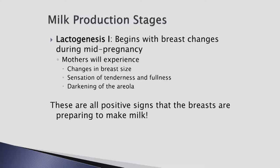Lactogenesis 1 begins around mid-pregnancy, 16 to 18 weeks gestation. Ductal and lobular development accelerates with the influences from hormones excreted during pregnancy. The glandular structure is able to begin secretion of colostrum by the last trimester. Some women may experience leaking; others will not. Both situations are normal. Let expectant moms know there is no need to express this milk before the baby is born.